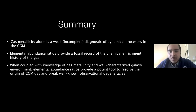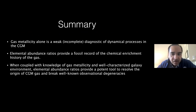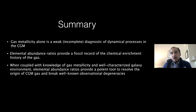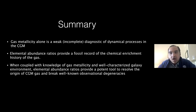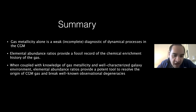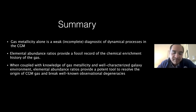Basically, that's all I wanted to say. To summarize: gas metallicity measurements in the CGM are great, but they give us only an incomplete at best diagnostic of the dynamical processes in the CGM. Elemental abundance ratios are awesome because they provide a fossil record of the chemical enrichment history. When you couple them with knowledge of metallicity, kinematics, and a deep galaxy survey, elemental ratios can provide a really powerful tool to resolve the chemical origin of CGM gas and break some well-known degeneracies in observations in the process. This kind of investigation is not only possible but actually doable, as long as one takes into account all the caveats. So let's try to get more of these kind of measurements done in the near future.